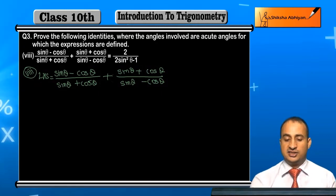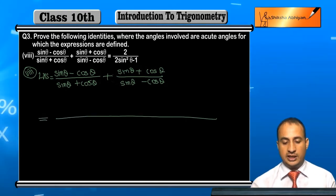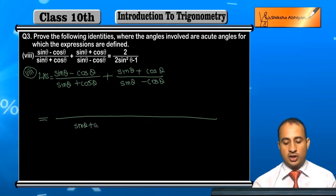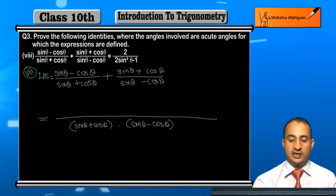Now take the LCM. Student, what will be the LCM? The LCM will be in the denominator: sine theta plus cos theta multiplied by sine theta minus cos theta.